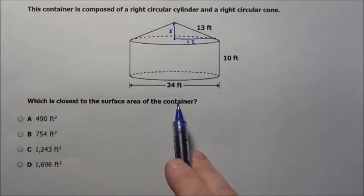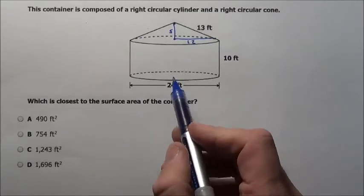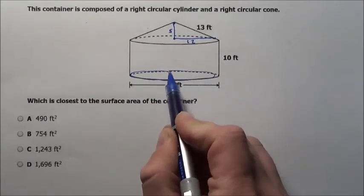It says, which is closest to the surface area of the container? So we have, this is interesting, we have the bottom, which is a circle.